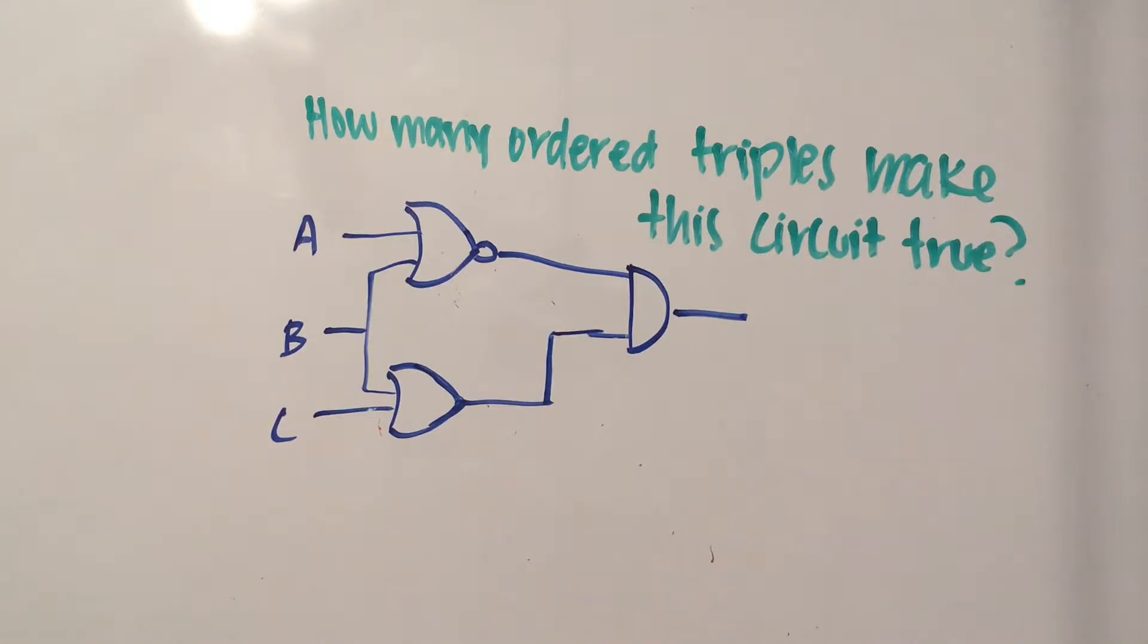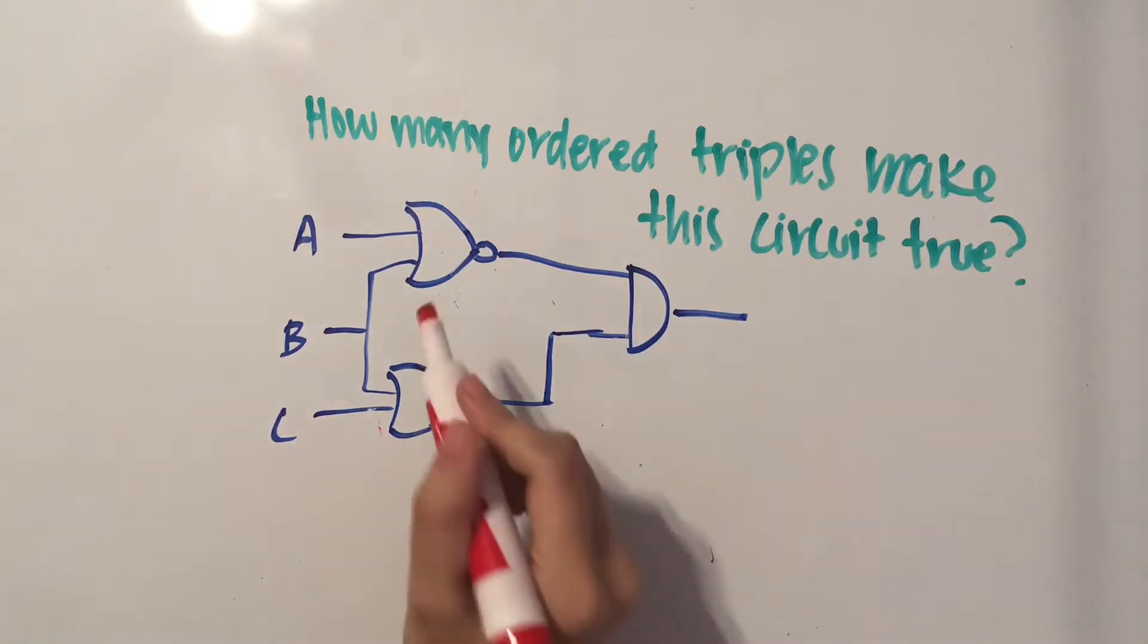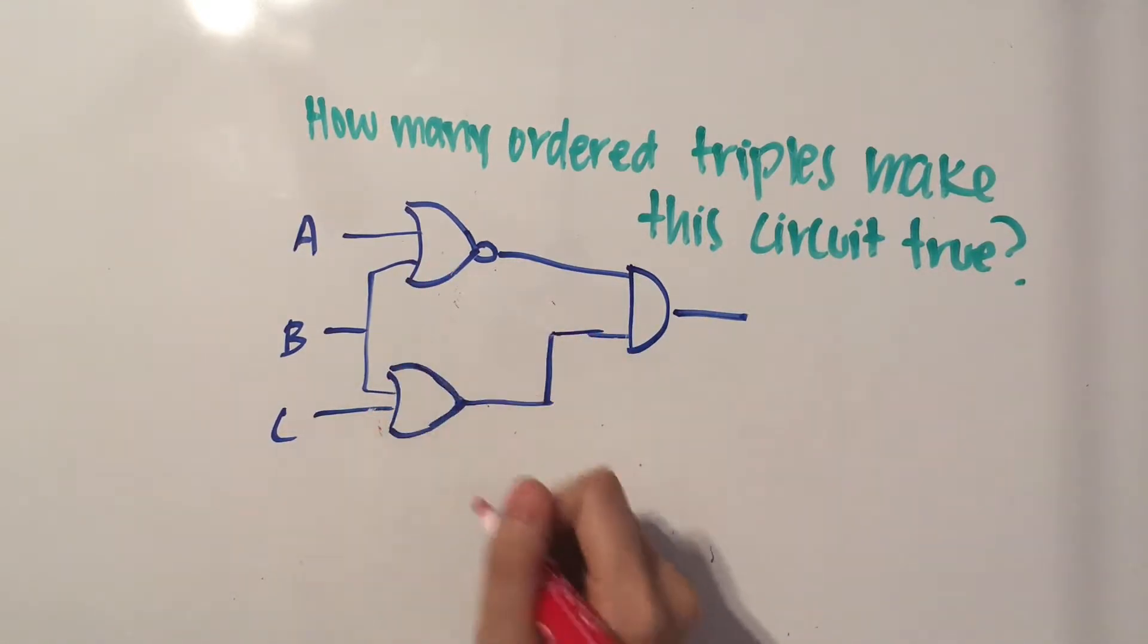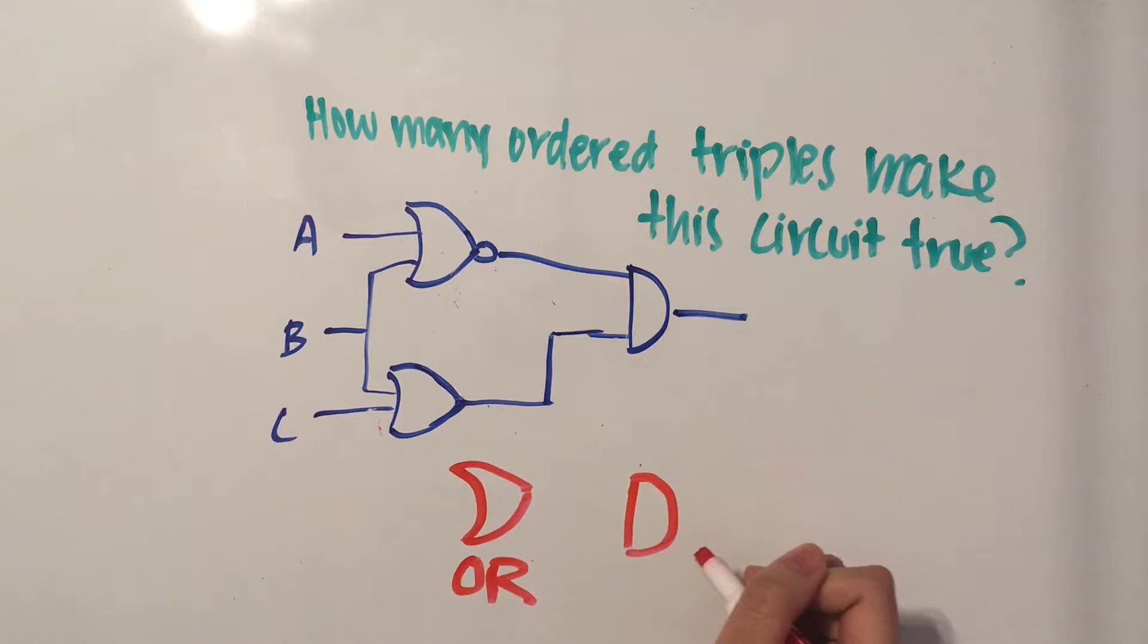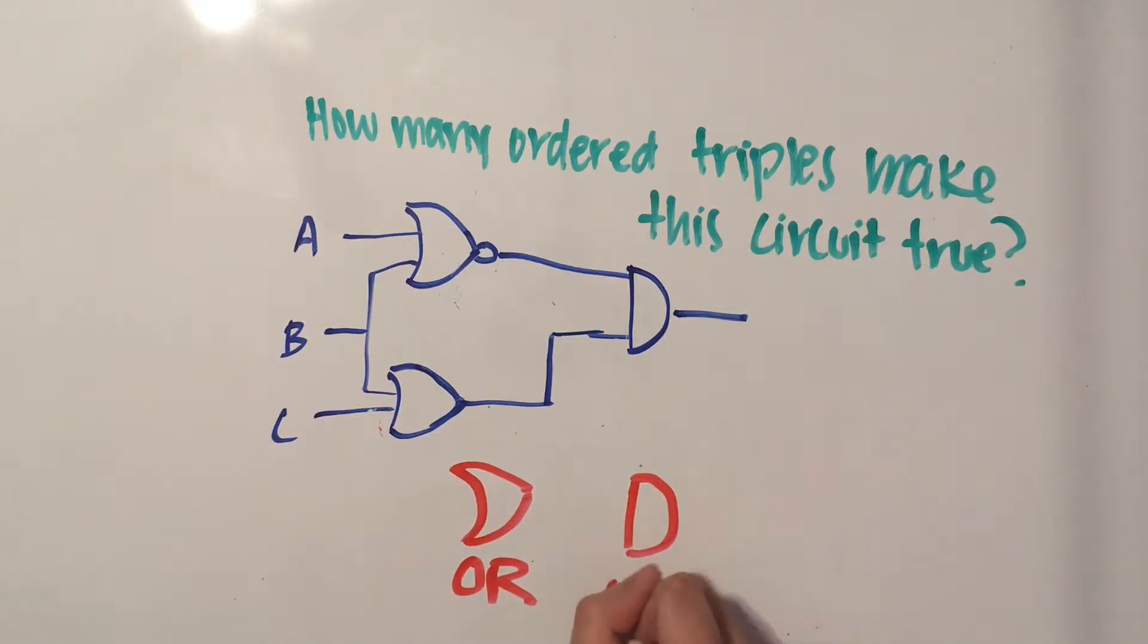So what we first need to do is go over what each of these mean. If we have a pointy looking arrow shape like here and here, then that's going to signify an OR gate. If we have this half moon shape or a more curved arrow, then that's going to signify an AND gate.